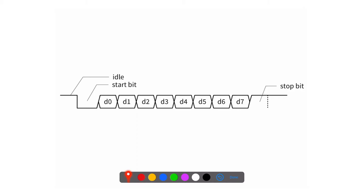Importantly, there is no shared clock between the transmitter and receiver. Each runs a completely separate clock that could be at different speeds or out of phase. There's no clock wire telling the receiver exactly when to sample — for instance, at a positive clock edge.